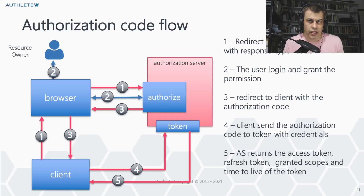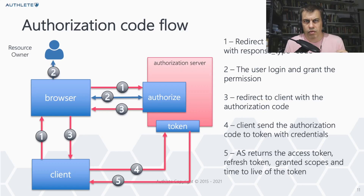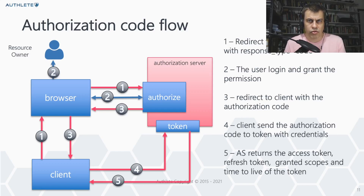Let's recap the entire flow. First, the client starts the authorization process using a redirect to the browser, including the client ID, redirect URI, list of scopes, and a state parameter. The browser connects to the authorization endpoint sending a GET request plus any session cookie already established. The authorization server may require the user to log in and provide explicit consent on permissions. The authorization server then renders a redirect response back to the client including the authorization code and state. The client validates the request and sends the authorization code in a POST to the token endpoint, including the redirect URL, grant type, and credentials, and gets back an access token, optionally a refresh token, granted scopes, and the token's time-to-live.